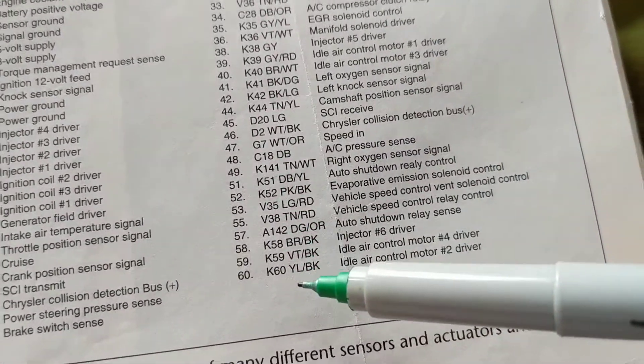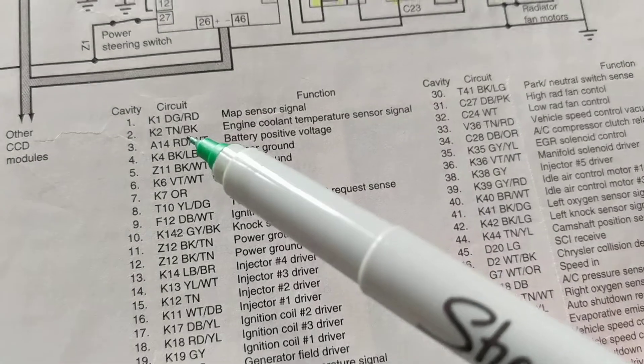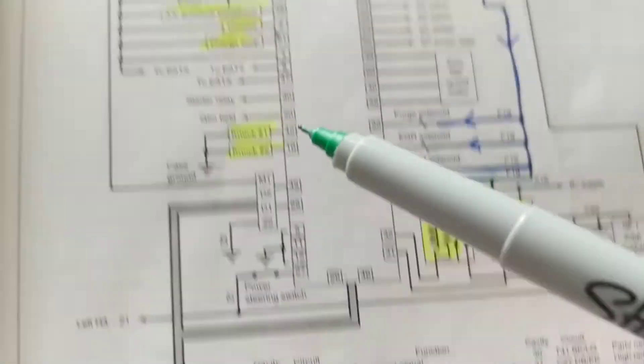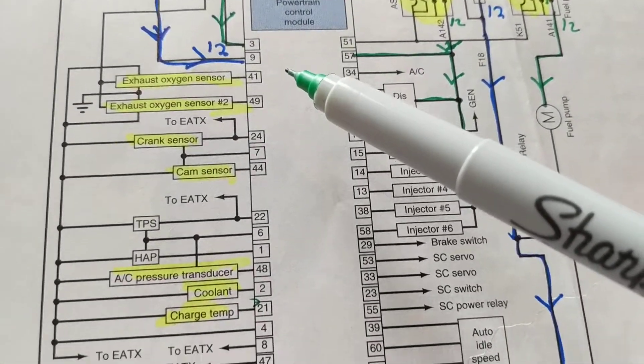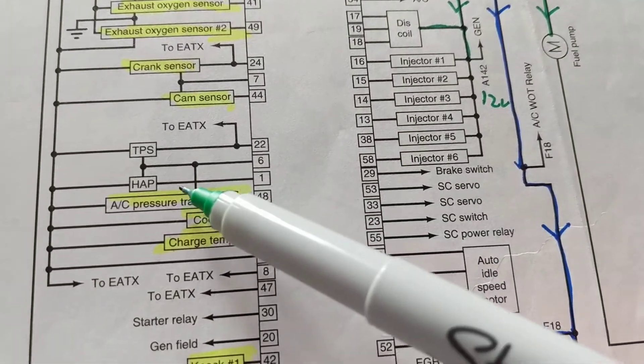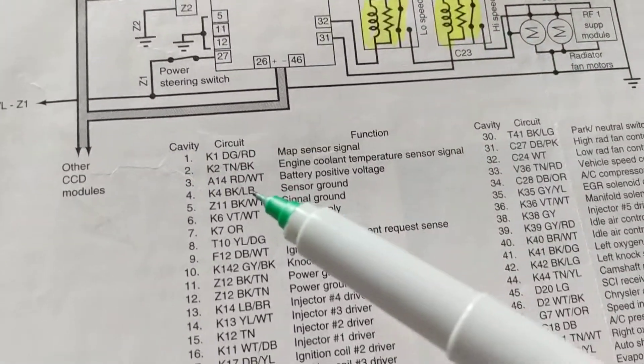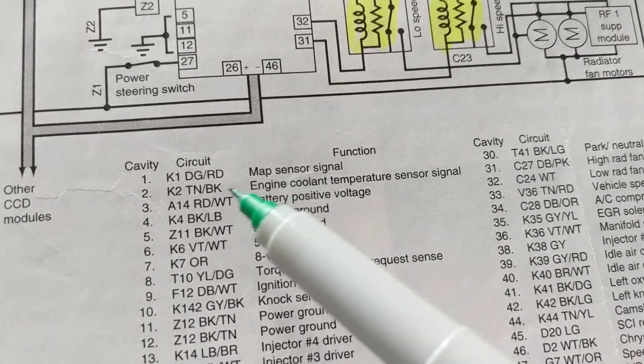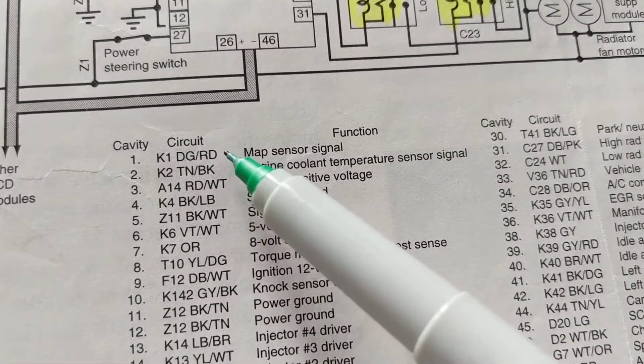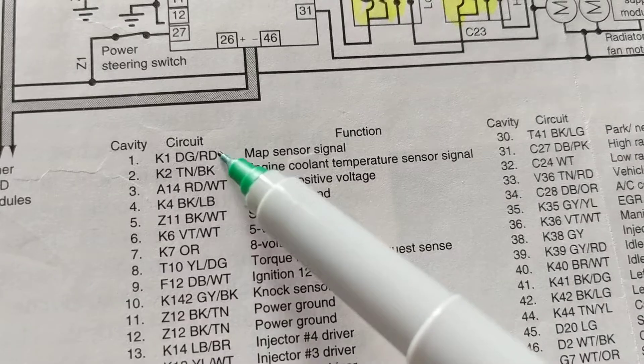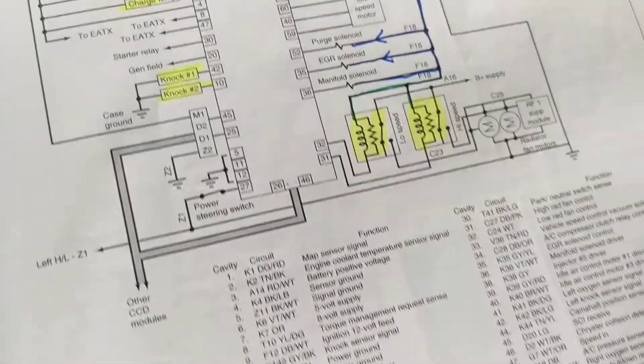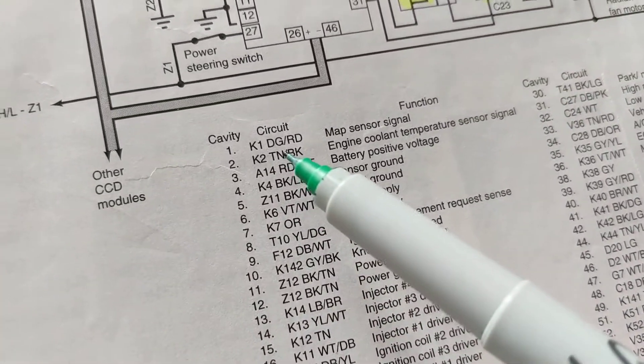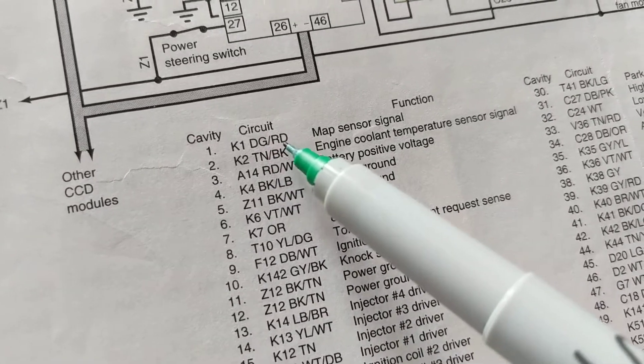So let's say there's 60 pins. You're looking for pin one—they call it a cavity, doesn't matter. Pin one over here, pin one, you go to the MAP sensor signal which is over here, dark red. So therefore, as you see over here, dark green actually and red.